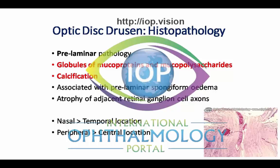We know that optic disc drusen are found more commonly nasally than in a temporal location, and more commonly in the peripheral or marginal parts of the optic disc as opposed to the central location.